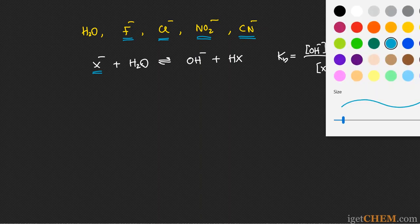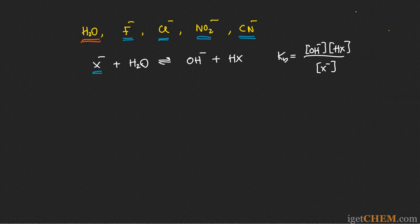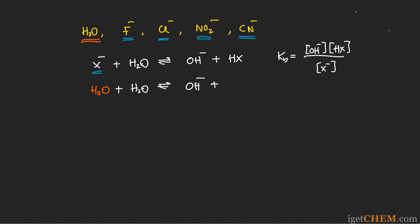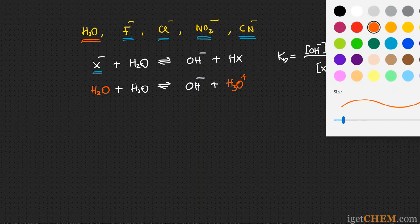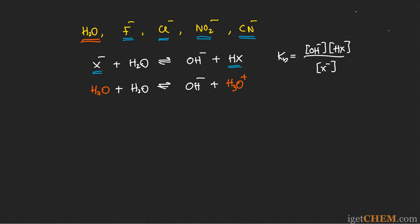The last one is a little different: H2O. H2O doesn't have a minus charge, so you think of H2O in the place of X-. When H2O acts as a base and abstracts a proton from another H2O, it becomes H3O+. So the equivalent of HX in this case, where X- is H2O, is actually H3O+.